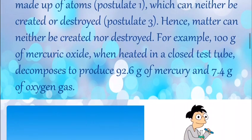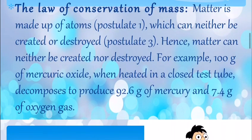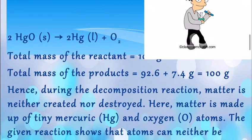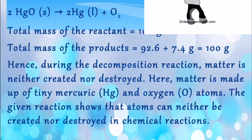Then it decomposes to produce 92.6 grams of mercury and the remaining oxygen gas is produced. Now, continuing further, the 92.6 grams of mercury is produced and oxygen is 7.4 grams.